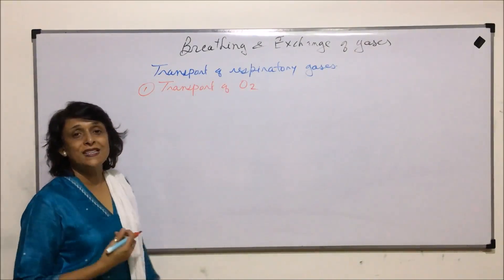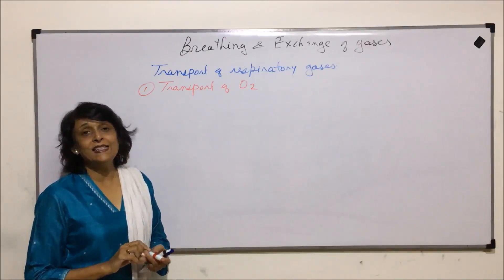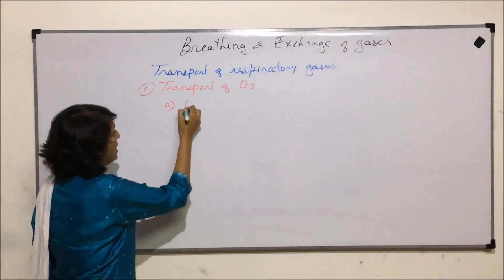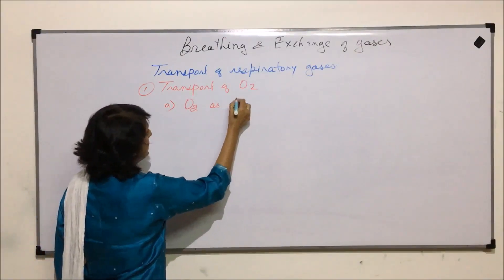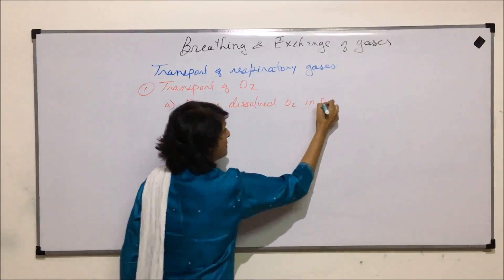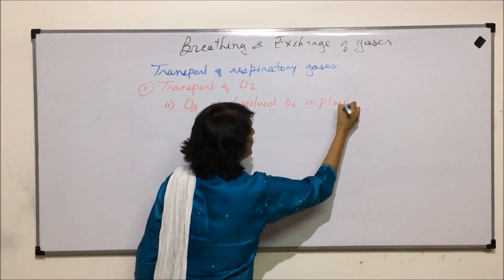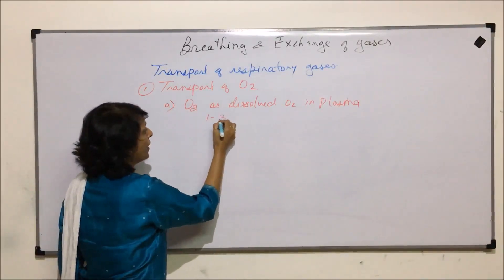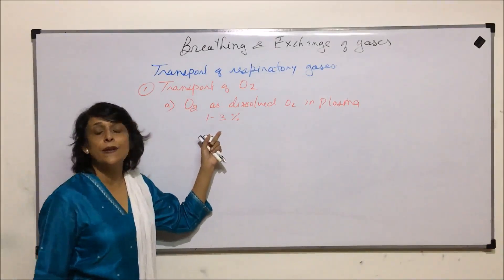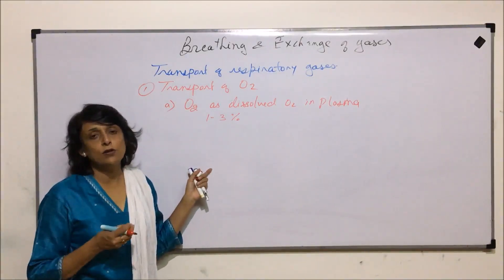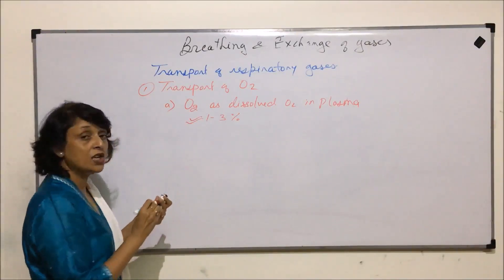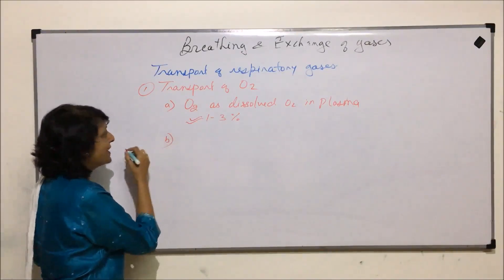Oxygen, when it diffuses in, is taken in two forms. One is as dissolved in plasma. This percentage is very less — hardly 1 to 3% of the total oxygen which is to be transported goes in this form, because very little oxygen dissolves in plasma. So only 1 to 3%.